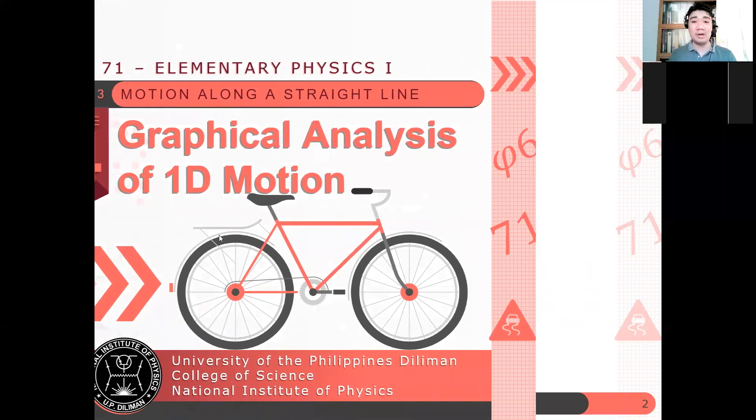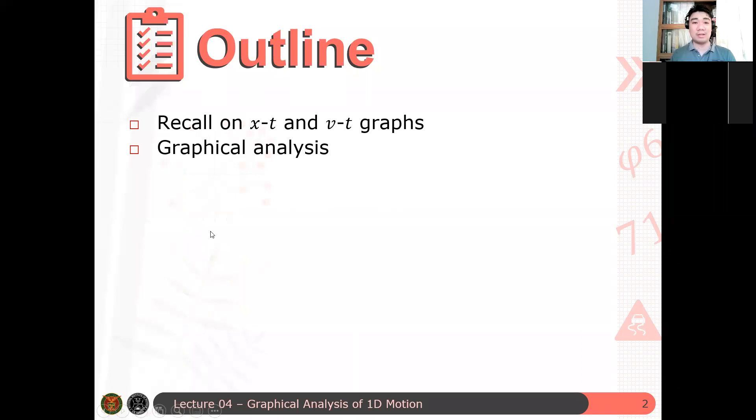So here's an outline of our discussion. Let's just review our position time and our velocity time graph. And then after that, we perform graphical analysis or we deduce the properties of the motion of an object based on its position time and its velocity time graph. May tanong ba so far? Okay, let's proceed.